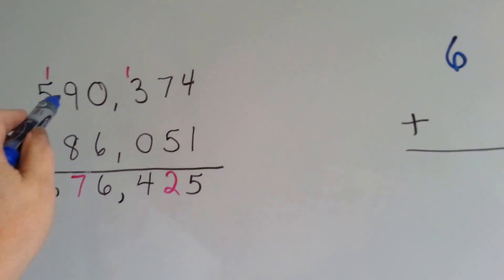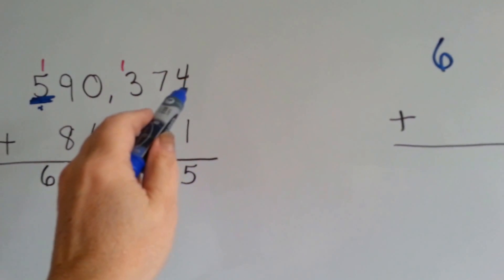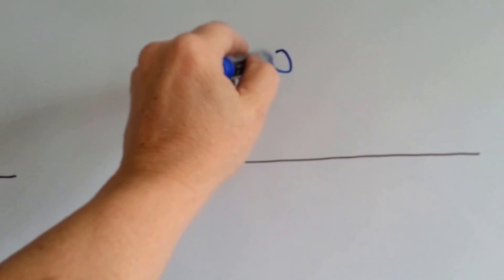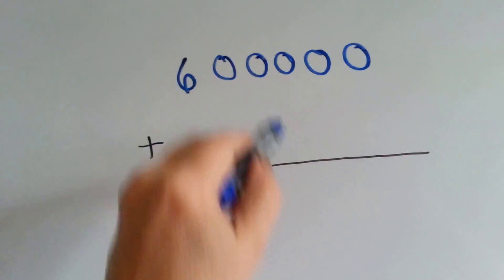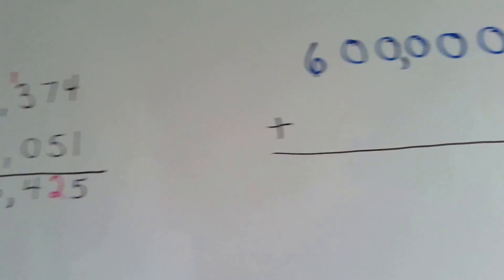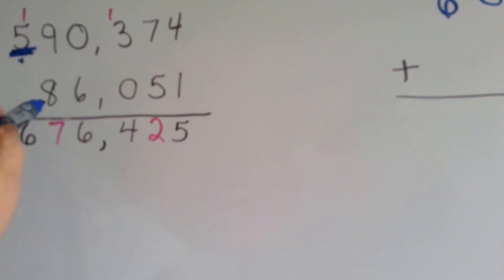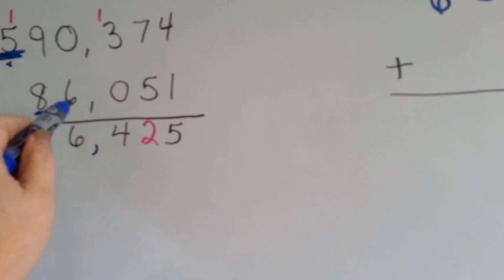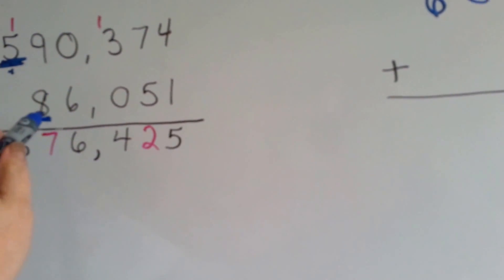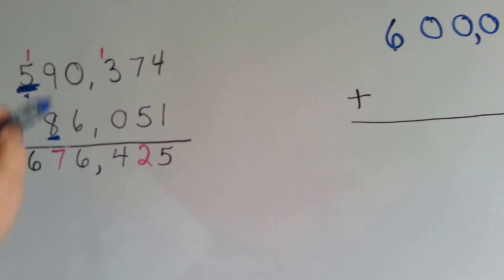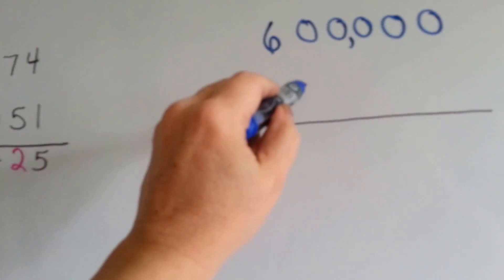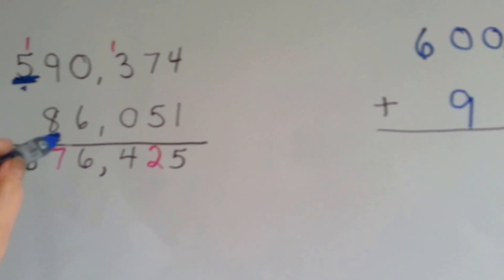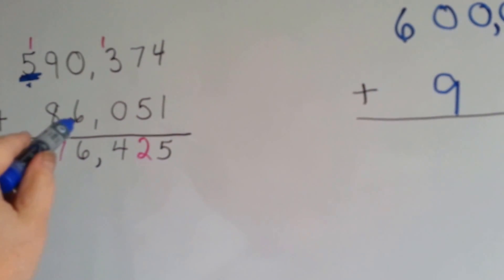Once the 9 is finished doing its job, it and all the other numbers turn into zeros. So we need 1, 2, 3, 4, 5 zeros. We put our comma in. Now we need to round off this one — round off to the first place. Is 6 bigger than 5? Yes, it is. So it's going to tell the 8 to go up to a 9. And remember, it's in the ten-thousandths place, not the hundred-thousandths place. So it tells it to go to a 9, and then it turns into a 0.